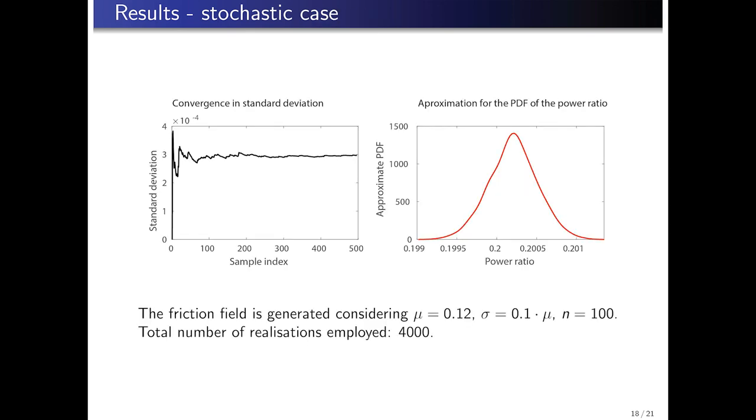The results for the stochastic case can be observed in this slide. To the left, a graph showing how the approximation of the PDF converges in deviation with the accumulated number of realizations, and to the right, the approximation to the PDF that has been calculated. A total number of 4,000 realizations were performed.